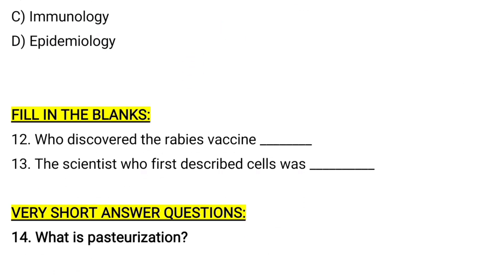Now let's see the next category: fill-in-the-blank type questions. Who discovered the rabies vaccine? Louis Pasteur discovered the vaccine for rabies disease. The scientist who first described cells was Robert Hooke. Don't worry about the answers — in the last session of this video I will share the slide with answers.